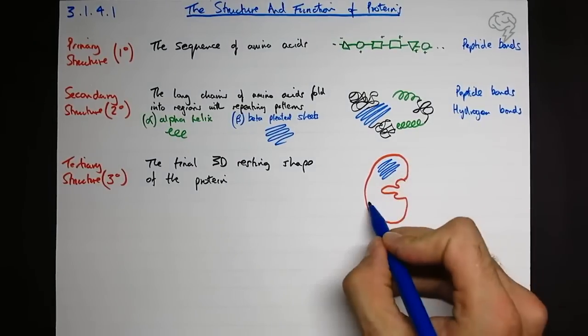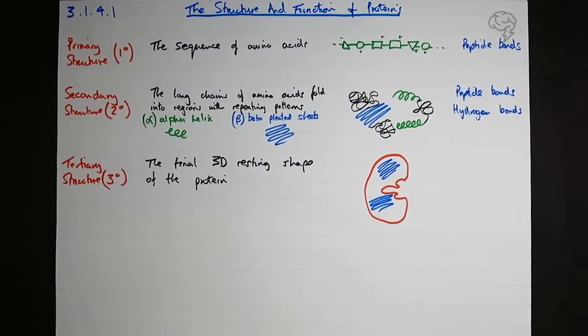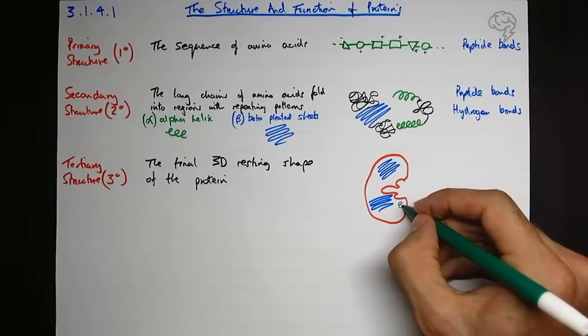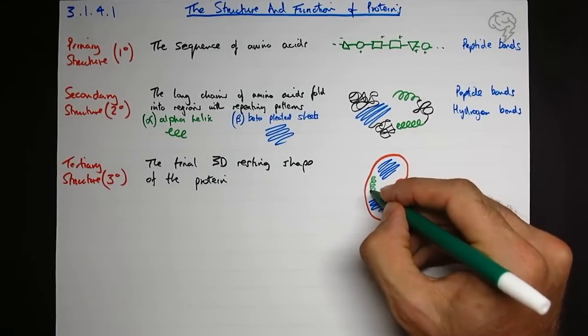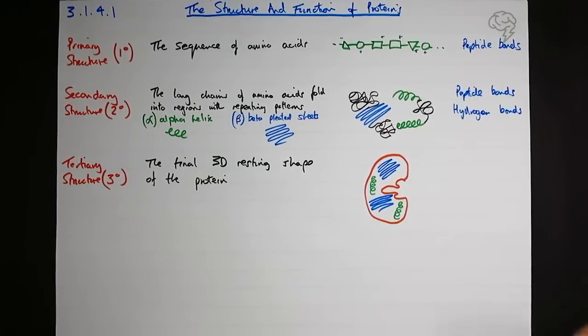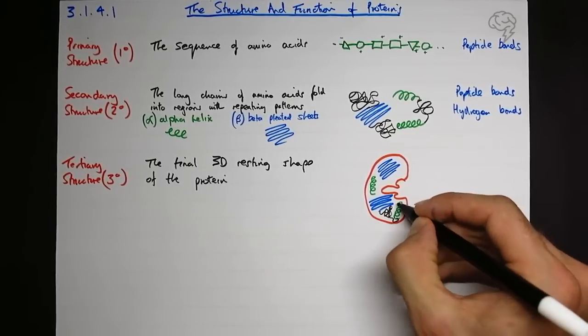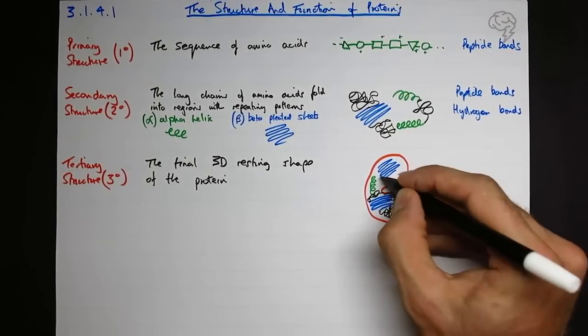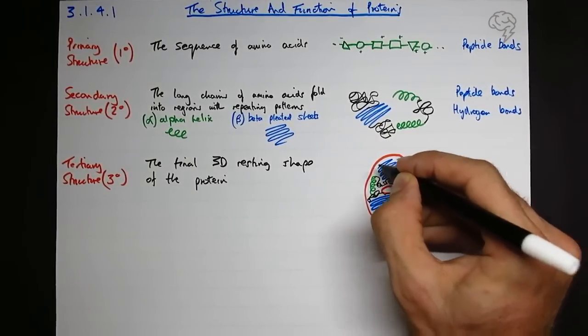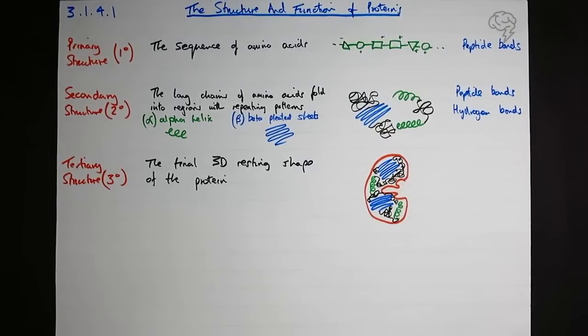And then within that, I'm actually going to draw these regions first because we're going to have our secondary structure, the regions within it, and then all of this space is going to be made up by the non-regular repeating regions of the polypeptide chain.